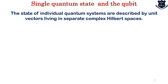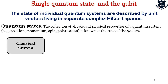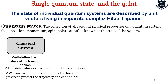We have seen that the state of individual quantum systems are described by something called complex Hilbert spaces. Quantum states are basically the collection of all relevant physical information, for example position, momentum, spin, and polarization. Typically in a classical system it is all a well-defined reality — the state value evolves under the equations of motion. We can use equations containing the force of gravity to predict the trajectory of a cannonball, just as depicted in this illustration.